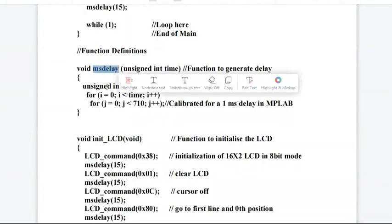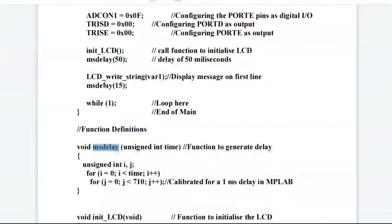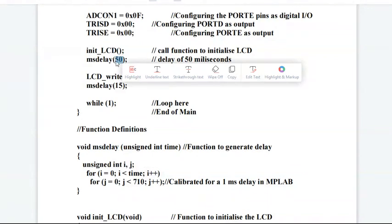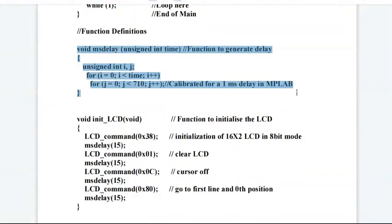Whenever this function msdelay is called in main, you can see the value passed to this function is an integer like 50 or 15. In order to receive that value in the function definition, we are using a variable time which is of unsigned integer data type. This is the definition of msdelay - it is calibrated for 1 millisecond delay in MPLAB software. Two for loops we have used here.